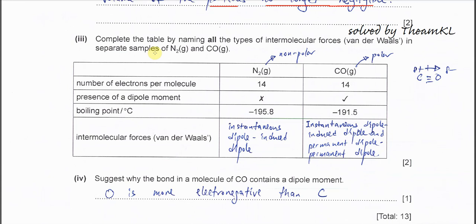Part iii. Complete the table by naming all types of intermolecular force. Intermolecular forces, we have 3 types: IDID (instantaneous dipole-induced dipole), PDPD (permanent dipole-permanent dipole), and hydrogen bonds. Now it wants you to list out all the types that are possible in nitrogen and CO.